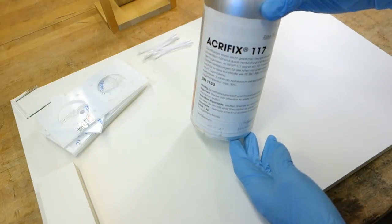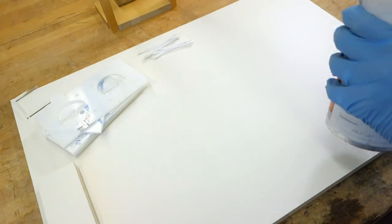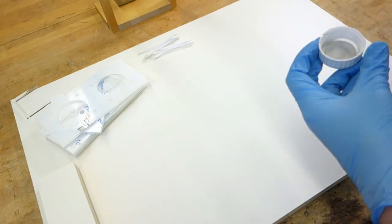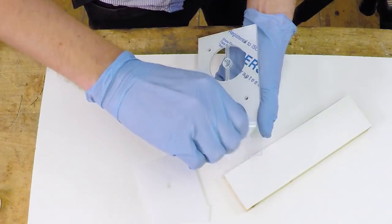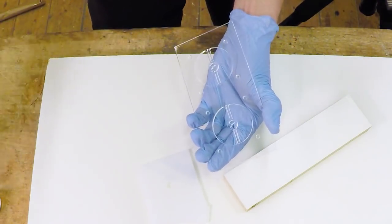I'm using an Acryfix adhesive that works mainly in softening the plastic using a solvent and allows it to bond with itself as the solvent evaporates. This can also be done with other solvents like acetone or chloroform.